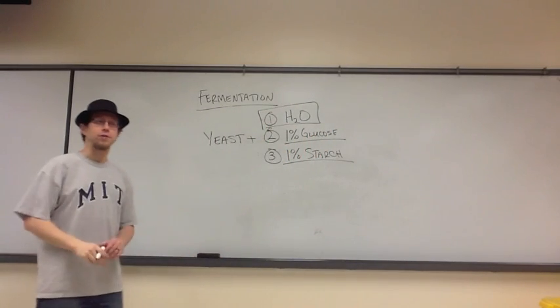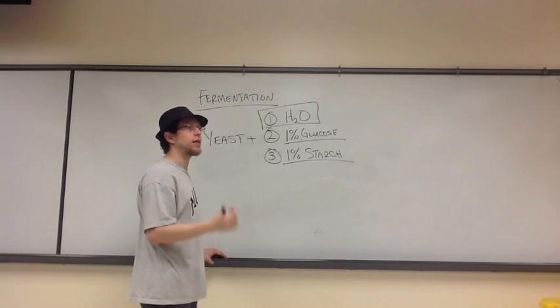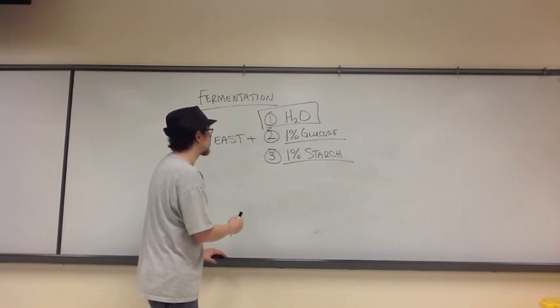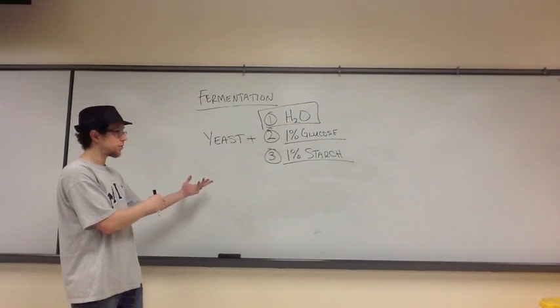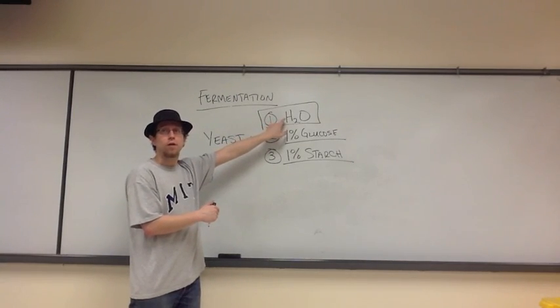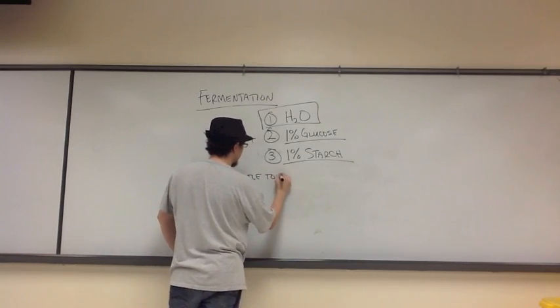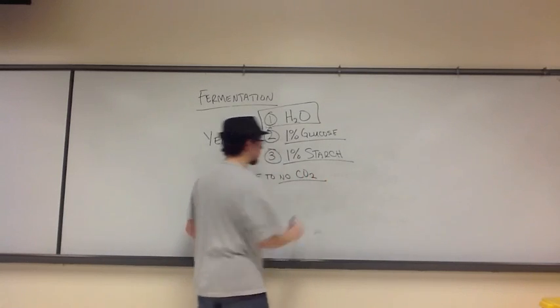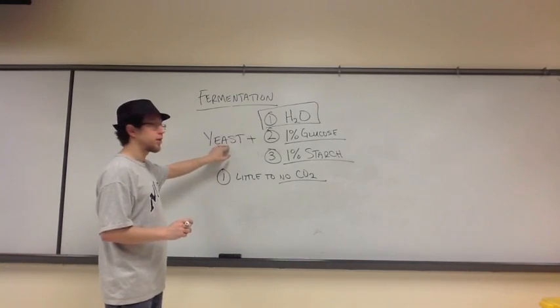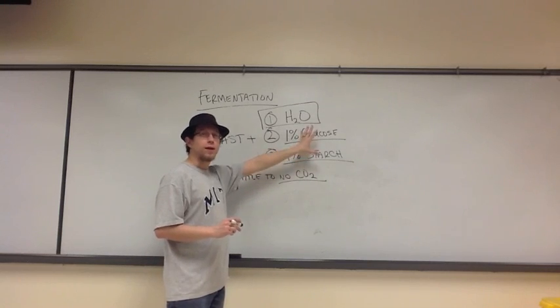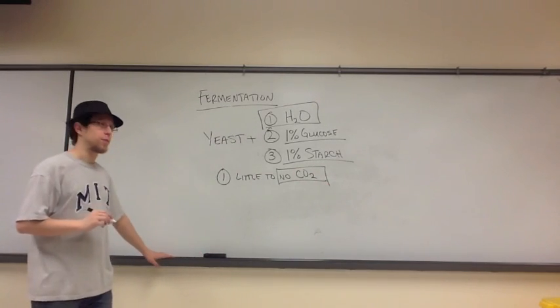With our first mixture of yeast and water, we do not expect to see any fermentation because those yeasts, outside of what they potentially have in them to begin with in terms of their cells, they're not going to have access to any kind of sugar source. They're going to be incapable of performing glycolysis simply on the water. In test tube one, we expect to see little to no carbon dioxide produced. On the off chance that the yeast themselves already had some trace amounts of sugar in them, they might produce just a little carbon dioxide. But most likely in your lab, you saw no carbon dioxide produced.